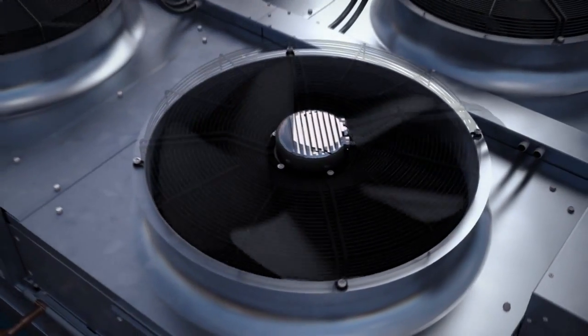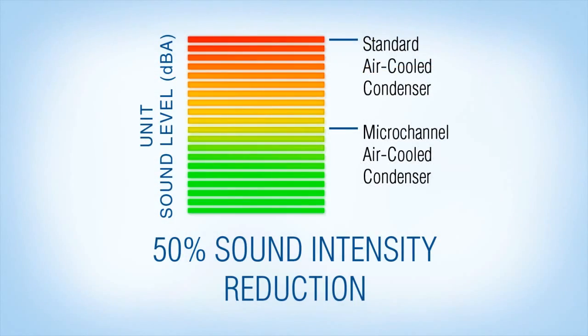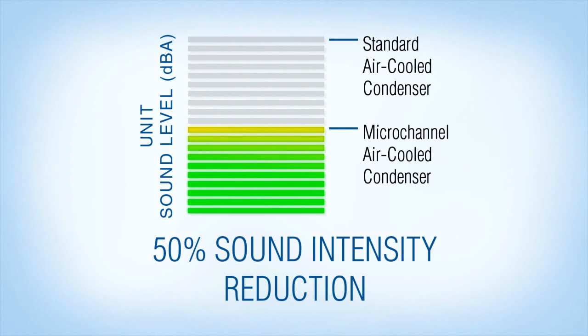But energy savings aren't the only benefit these components offer. Combined, the efficient coil and EC motors reduce system sound intensity by 50%, 3.4 decibels lower than comparable air-cooled condensers with EC motors.